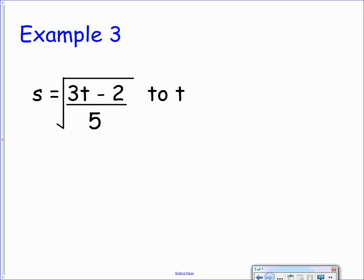Example number three now. So we've got quite a bigger expression this time. We have 3t minus 2 all over 5 underneath the square root. We're looking to change the subject to t, so this term here. That's what we want on its own. So again, let's make a wee list to the side to see what's going on around t.